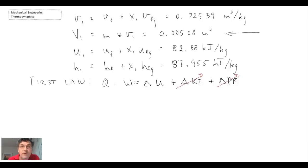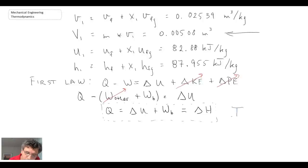I'm going to rewrite the work in terms of work other plus work boundary. We can say there is no other form of work. The only form of work taking place is boundary work. Consequently, what we're left with is heat equals the change in internal energy plus the boundary work WB. That is also equal to the change in enthalpy. We're going to call that equation number one, or we can also write equation number two.